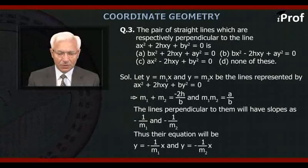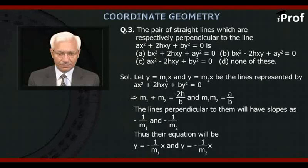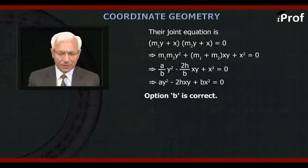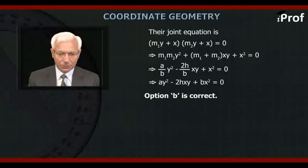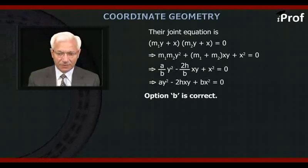Their equations are Y = -X/M1 and Y = -X/M2. Their joint equation is (M1·Y + X)(M2·Y + X) = 0, which simplifies to M1·M2·Y² + (M1 + M2)·XY + X² = 0. Substituting A/B for M1·M2 and -2H/B for M1 + M2, this simplifies to AY² - 2HXY + BX² = 0, which is Option B.